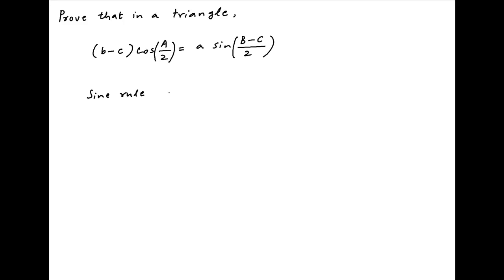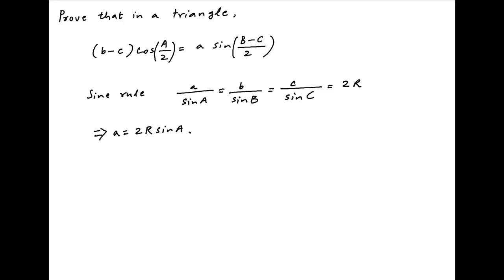From the sine rule in triangle ABC, we have a upon sine A is equal to b upon sine B is equal to c upon sine C, all of which are equal to 2R, where R is the radius of the circumcircle of the triangle. Therefore, a = 2R sin A, b = 2R sin B, and c = 2R sin C.